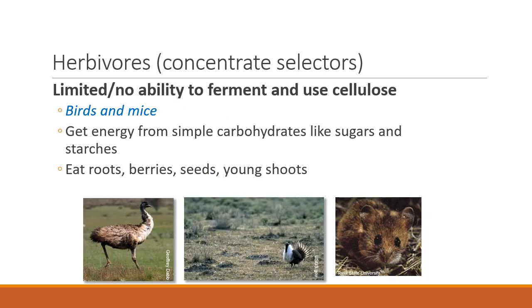There can also be herbivores that don't digest cellulose, but instead find compounds on the range that don't have much cellulose in them. Those are called concentrate selectors. They include birds, small rodents, mice, etc. What they do is search the environment for simple carbohydrates — starches and sugars — and break those down. So they eat mostly roots, berries, seeds, and young shoots. Birds, even as large as emus and ostriches, don't digest a lot of cellulose, but their system allows them to break apart plant cells enough to get those soluble parts.